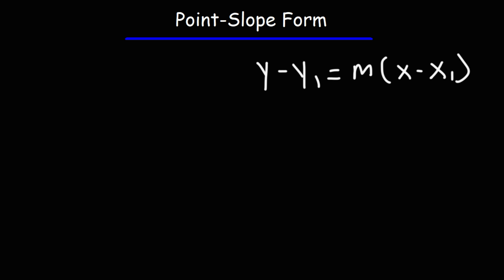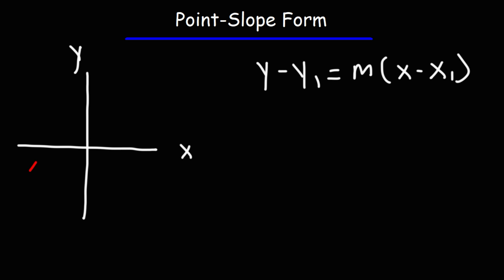So let's talk about how to use it. Let's say we have a graph — that's the x-axis, this is the y-axis — and we have a linear equation that looks like this. Just to keep things simple, let's say this point is at (2, 5): x is 2, y is 5. And let's say this line has a slope of 3.